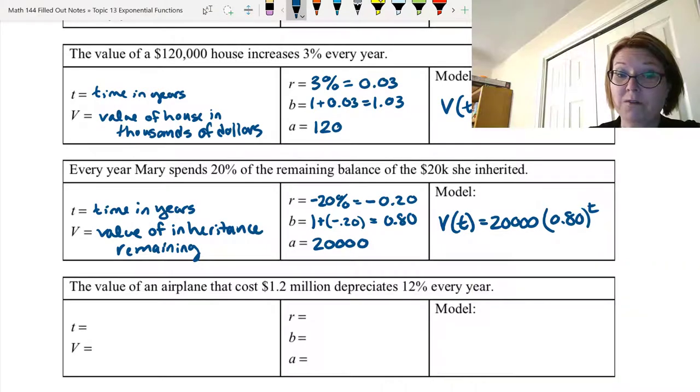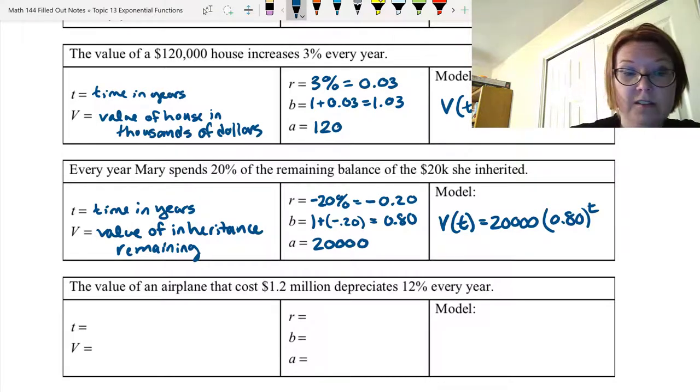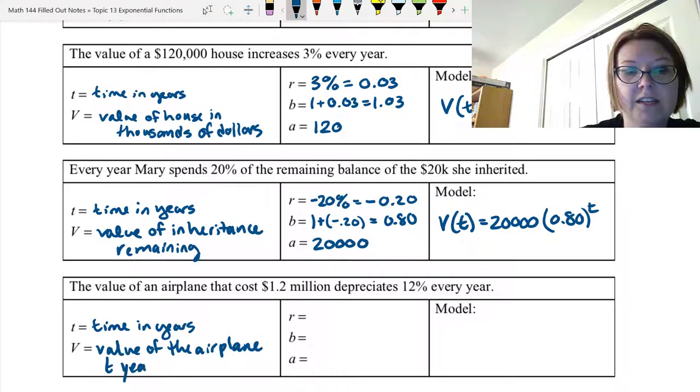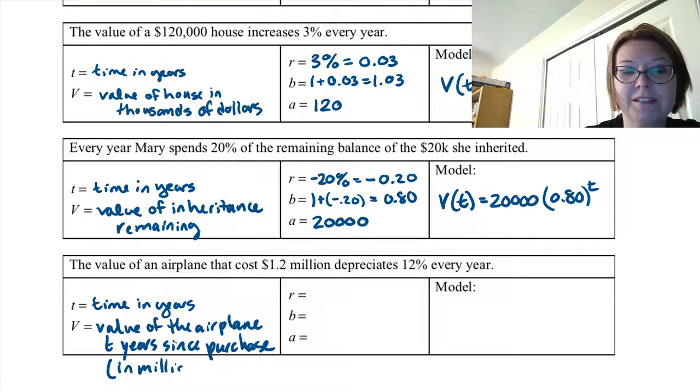Last problem. The value of an airplane that cost 1.2 million dollars depreciates 12% every year. So it's going down by 12% every year. T is time in years. These were all kind of boring problems since they were all time in years. But again, that's not always the case. V is going to be the value of the airplane. I'm going to actually add here. It's T years since purchase because purchase is what starts the problem out here. And this one's going to be in millions as well of dollars.